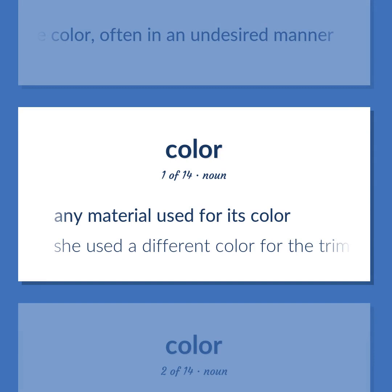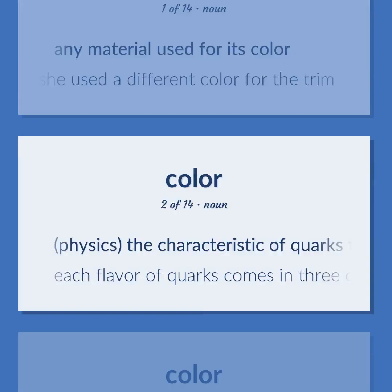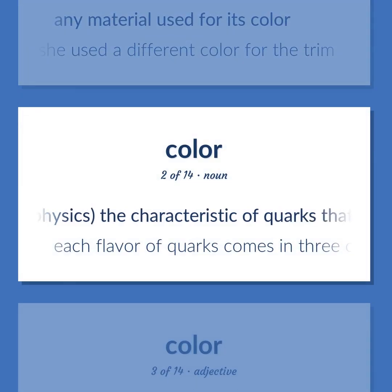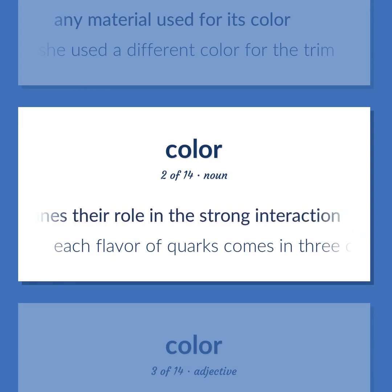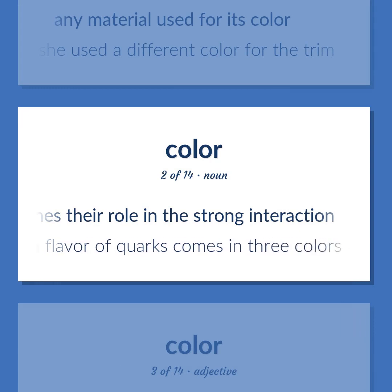Any material used for its color. She used a different color for the trim. Physics: the characteristic of quarks that determines their role in the strong interaction. Each flavor of quarks comes in three colors.